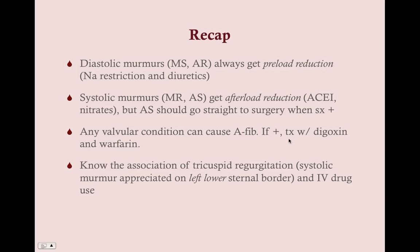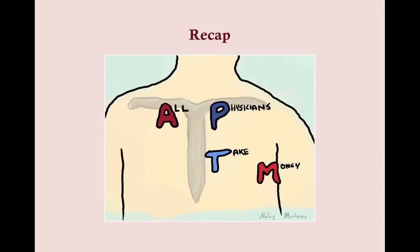One more thing deserving mention: know the association of tricuspid regurgitation and IV drug use. Tricuspid regurgitation, like mitral regurgitation, is a systolic murmur, but heard on the left lower sternal border where all tricuspid sounds are appreciated. Aortic murmurs are heard at the right upper sternal margin, pulmonary at the left upper sternal margin, tricuspid at the left lower sternal margin, and mitral murmurs at the apex. Mnemonic: 'All physicians take money.'